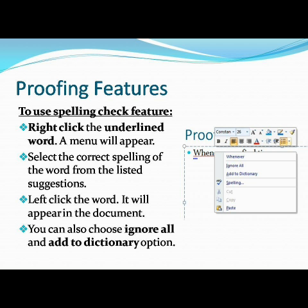Next is the proofing feature. What do we mean by proofing? Whatever content we type, we want to type without error — without any mistakes. Even if we have typed something incorrectly, it will appear with a red wavy underline, showing there is a mistake. So we have to correct it. To correct those mistakes, right-click on that red underlined word. For example, I have typed 'whenever' with a mistake, and it appears with a red underline. When I right-click, a correct option appears — you can select the correct spelling from the list.